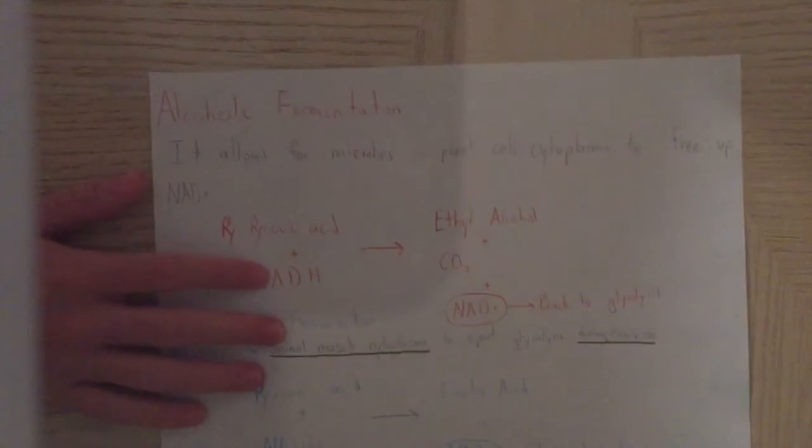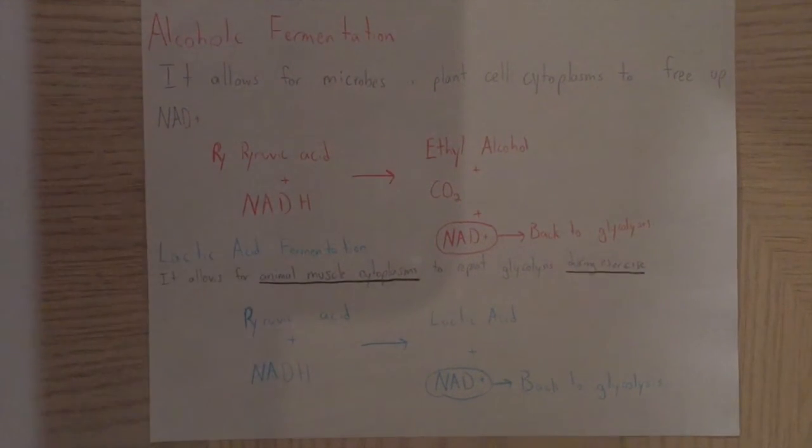Fermentation is the pathway that can be followed when oxygen is lacking. This includes alcoholic fermentation and the other fermentation with lactic acid. Both require a steady and strong supply of pyruvic acid and NADH. The lactic acid is done in the muscle cytoplasm. Alcoholic is done in plants.